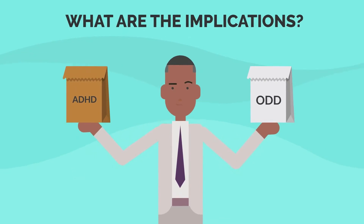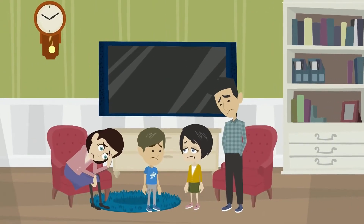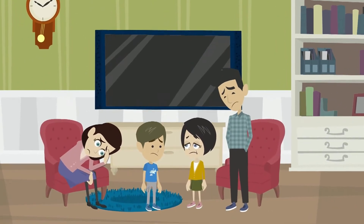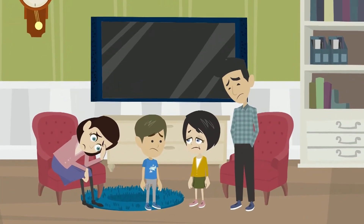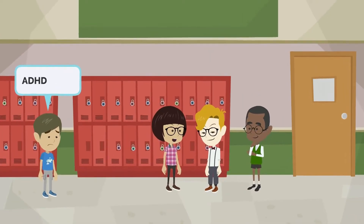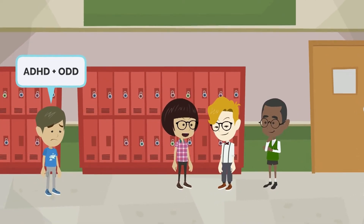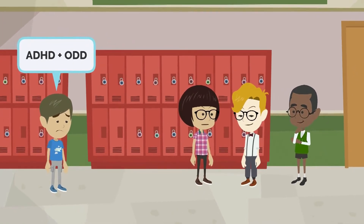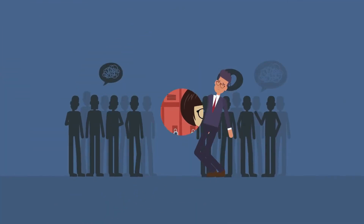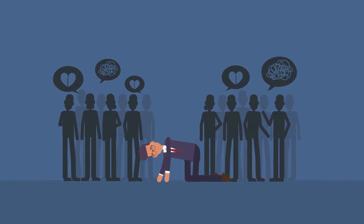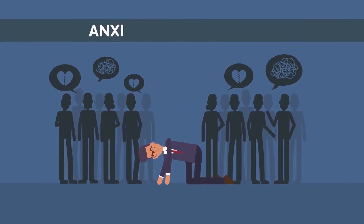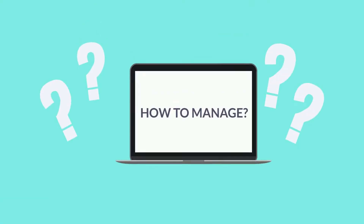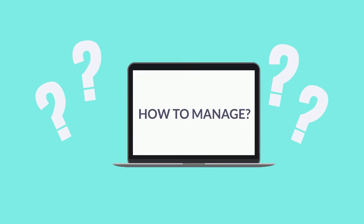So what are the implications of having both ADHD and ODD? Well, it can make things even more challenging for children and their families. Children with ADHD and ODD are more likely to have academic and social problems. They're also at risk of developing other mental health disorders such as anxiety and depression.